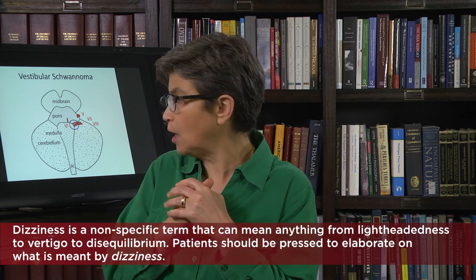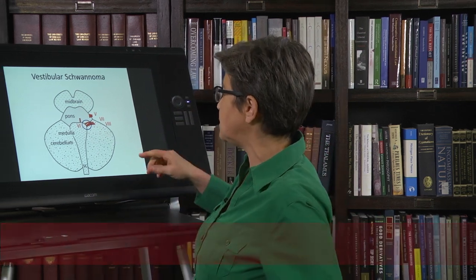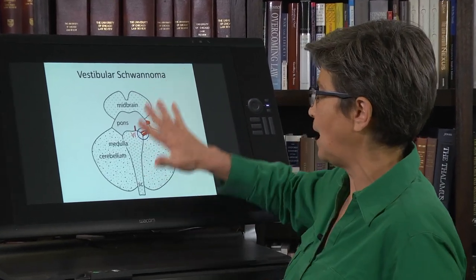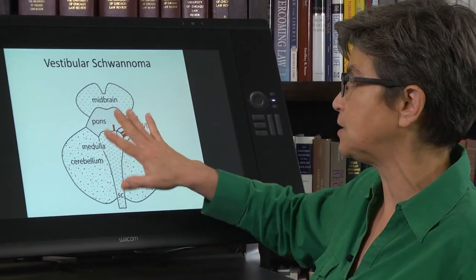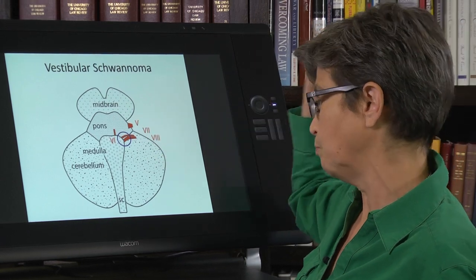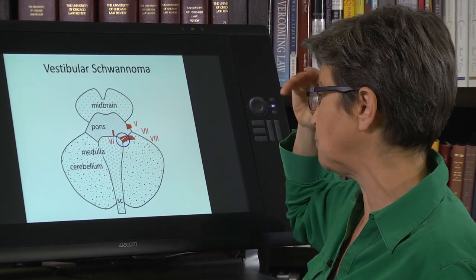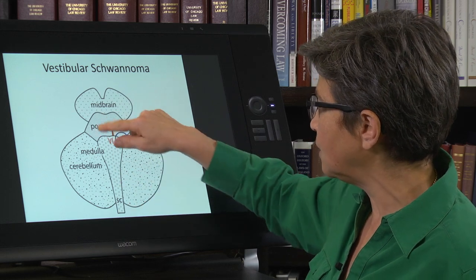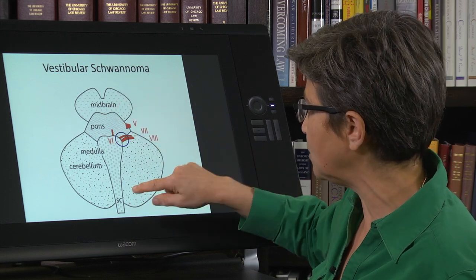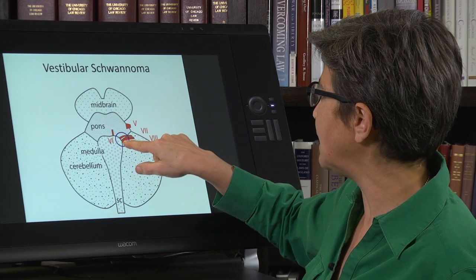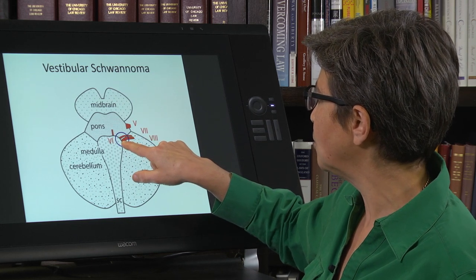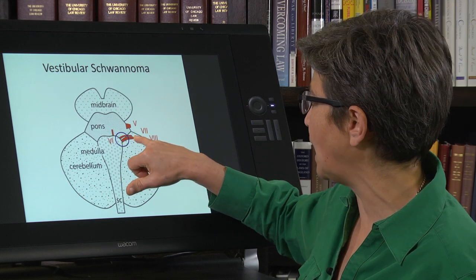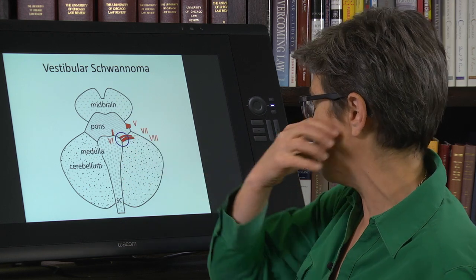Here is a schematic looking down at just the brain stem — the cerebrum has been removed. You have the spinal cord, the medulla, the pons, the midbrain, and the cerebellum. Coming out here are the facial nerve, and just lateral to the facial nerve is the vestibulocochlear nerve.